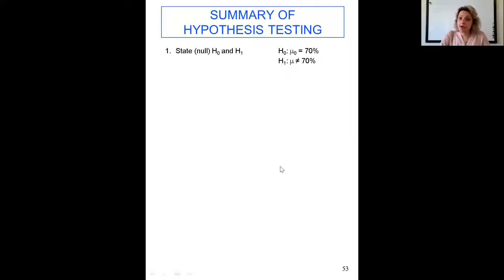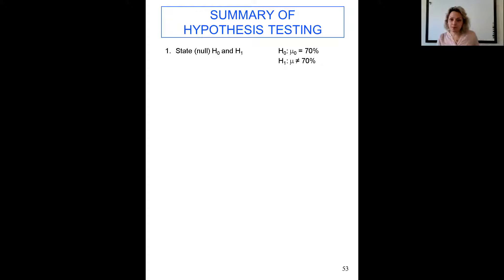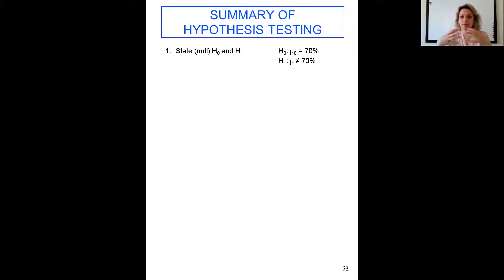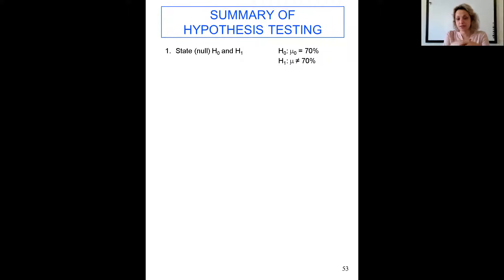In this video we want to go through the summary of hypothesis testing — the general procedure. In second-year stats we said the general procedure has eight steps, but here we are going to go through five steps. We try to combine some steps into one, but it's the same. You can use eight steps as well, but this five-step version is faster and both are acceptable.